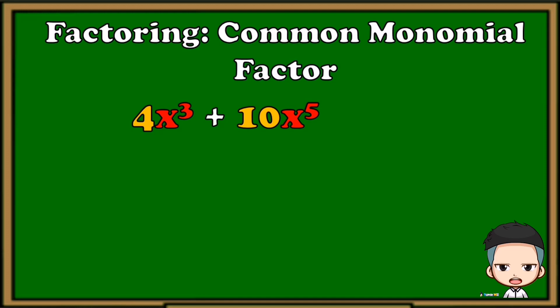Now let's try factoring using common monomial factor. We have here 4x cubed plus 10x raised to 5. The first thing we need to do is find the GCF of their numerical coefficients, which is 2. Next, the GCF of the variable x, which is x cubed. We now have 2x cubed as our common monomial factor.